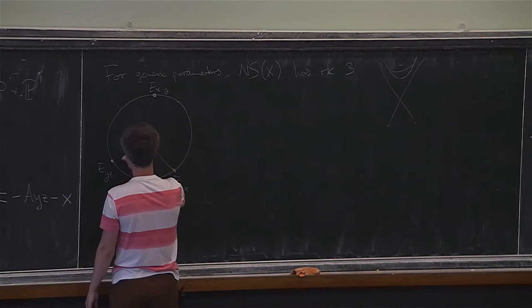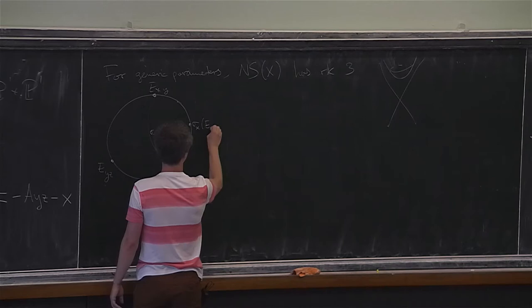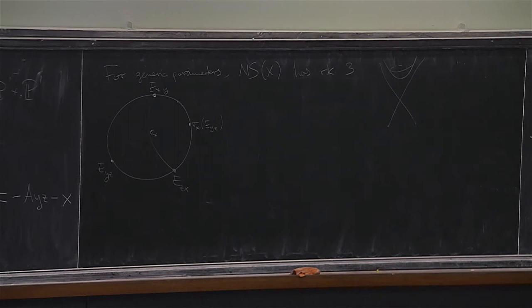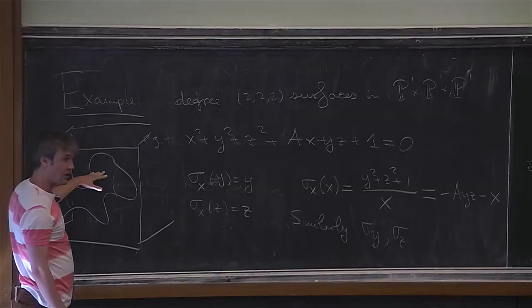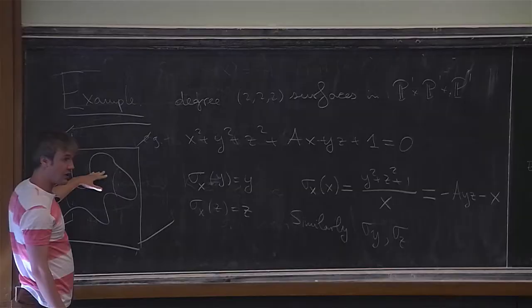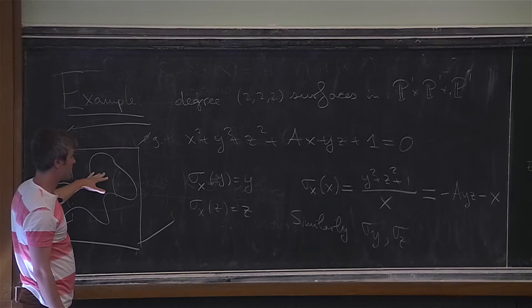Sigma_x will preserve two of these curves and will act as a reflection, taking E_{yz} to another class. E_{xy} is the cohomology class you get by intersecting the surface with the xy-plane, i.e., z equals a constant. Sigma_x is an involution which preserves these curves, and why it is an elliptic curve: if you do this one dimension lower, a degree (2,2) curve in P^1 times P^1 is an elliptic curve.